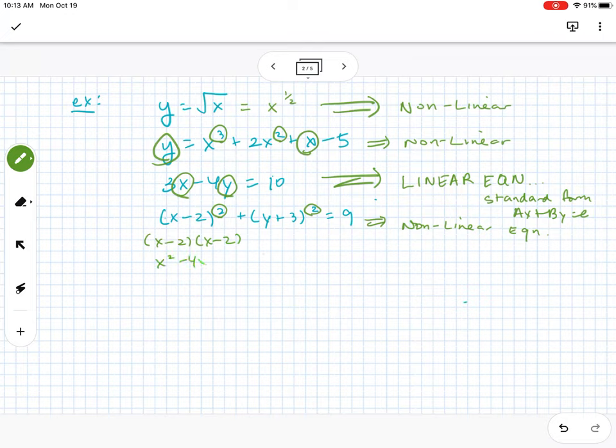And then the last one here, this one would also be non-linear. This is actually the equation of a circle. But this is a non-linear equation because of the squared here and the squared here. So when you do x minus 2 times x minus 2, that becomes x squared minus 4x plus 4. Because of that, we would say that it's non-linear.